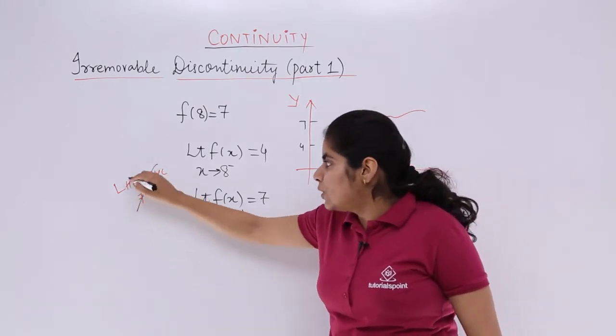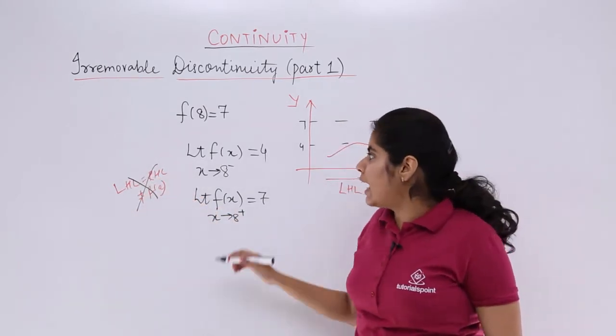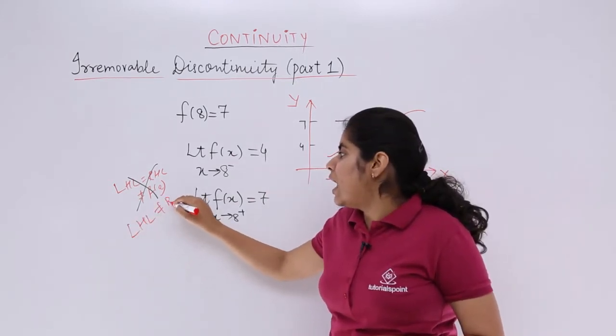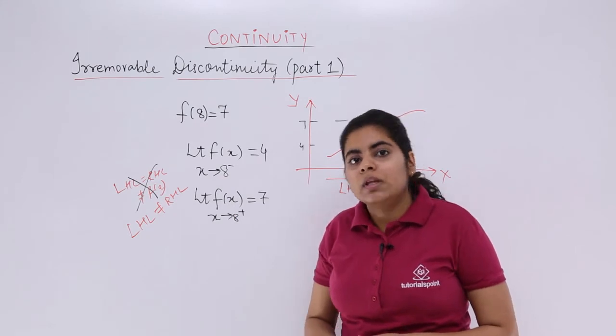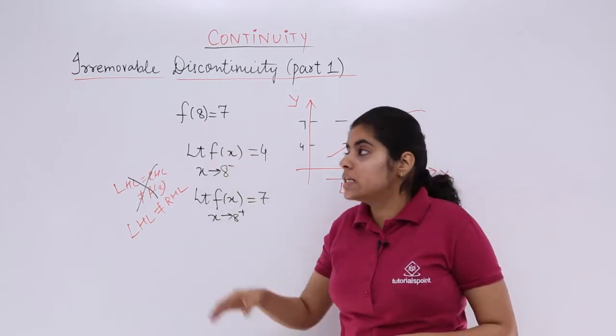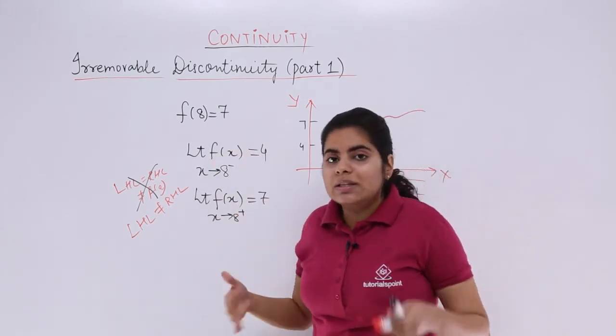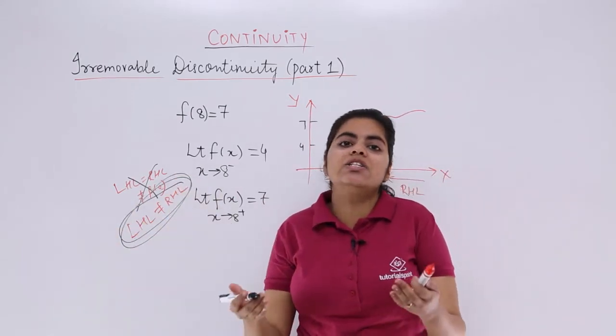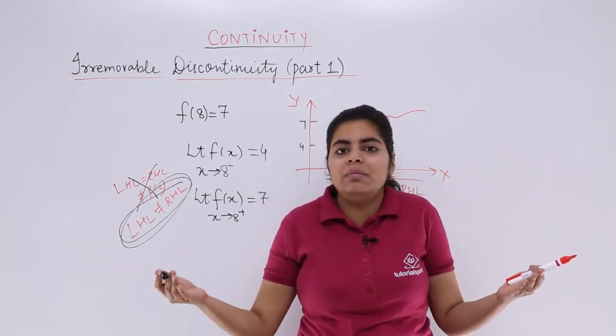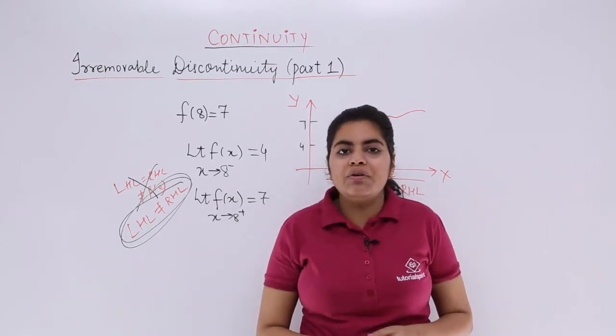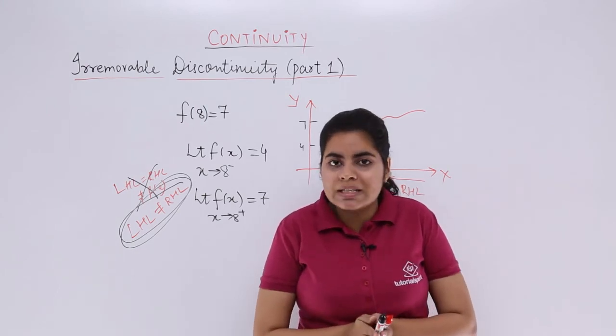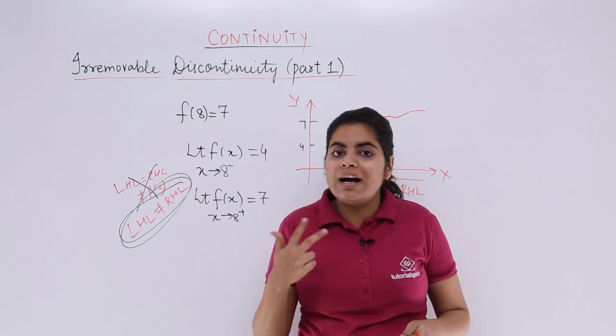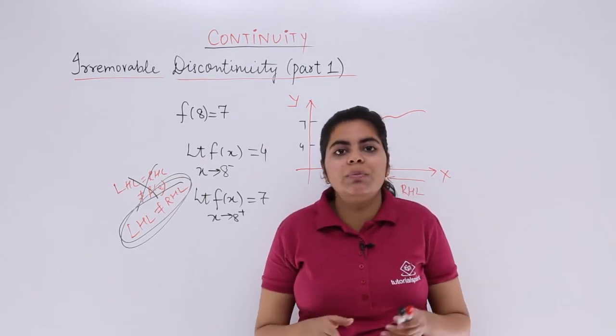But here the story is not this. The story is that these 2 things themselves are not equal. That means LHL and RHL are themselves not equal. But the value of the function exists and it is equal to one of them. So this kind of discontinuity where the limit actually does not exist. Why does not exist? Because the left-hand limit and the right-hand limit are not equal. That kind of discontinuity is called as irremovable discontinuity. In the next video, we will also see in what other case can discontinuity not be removed.